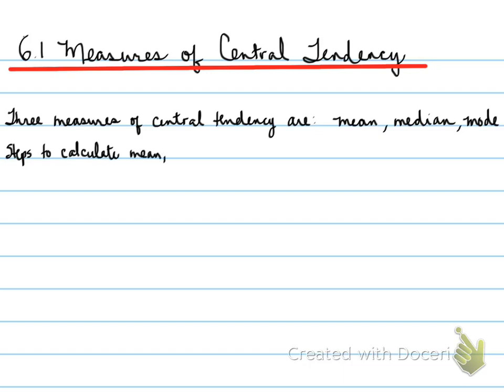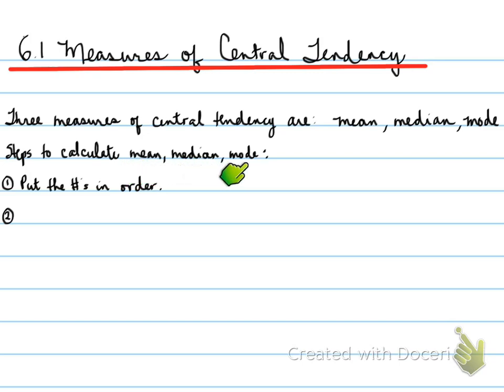Now, the steps to calculate mean, median, and mode: you need to do the following. It's very important that you put the numbers in order. The reason I want you to put the numbers in order is not to find the mean, but to help us find the median and the mode.